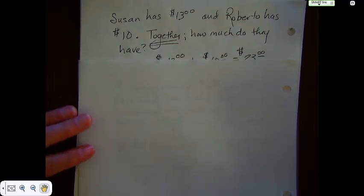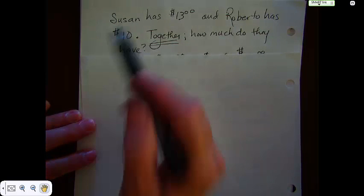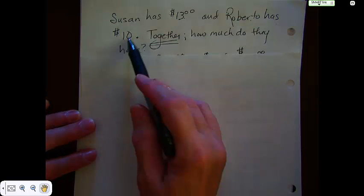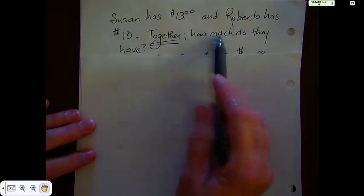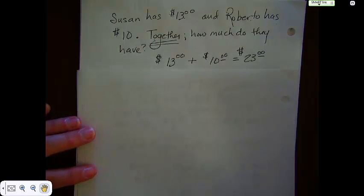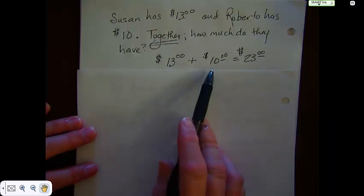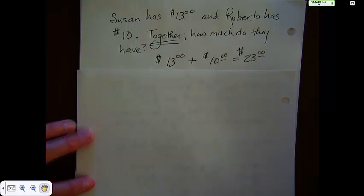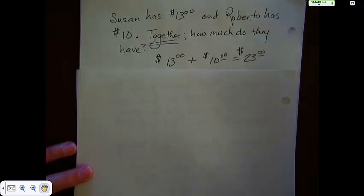I'm going to give you just a couple of example problems. The book has some really good ones, so I'm not going to spend a lot of time doing this. But for instance, Susan has $13 and Roberto has $10. Together, how much do they have? Together is your word, and you're going to combine. You're going to combine $13 plus $10, and that's going to give you a total amount of $23. It's mostly looking for the wordage or the plot in the word problem.